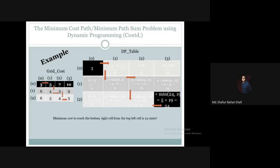So our solution, the path associated with the minimum cost that is 24 units, is: (0,0) to (0,1), (0,1) to (1,1), (1,1) to (1,2), (1,2) to (2,2), and lastly (2,2) to (2,3). This is how we can implement the minimum cost path or the minimum path sum problem using the dynamic programming paradigm.